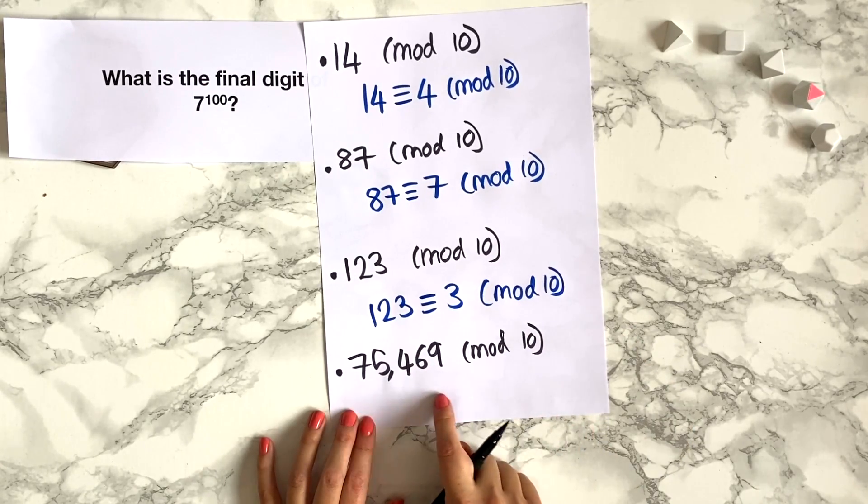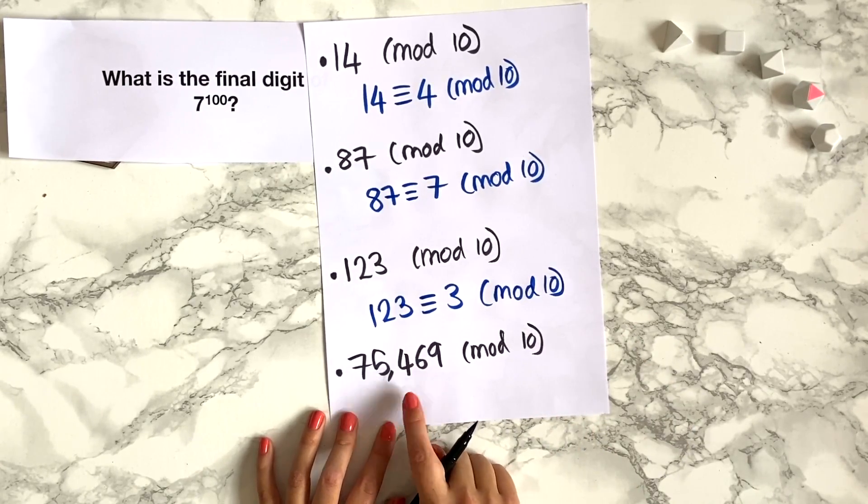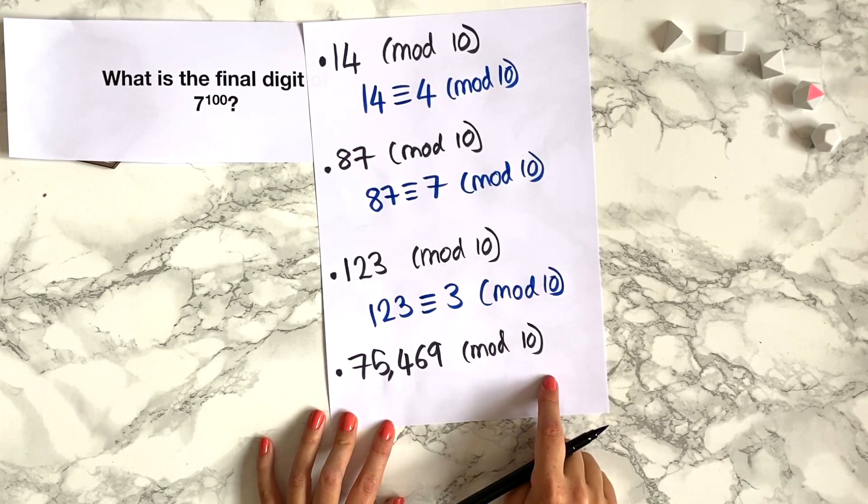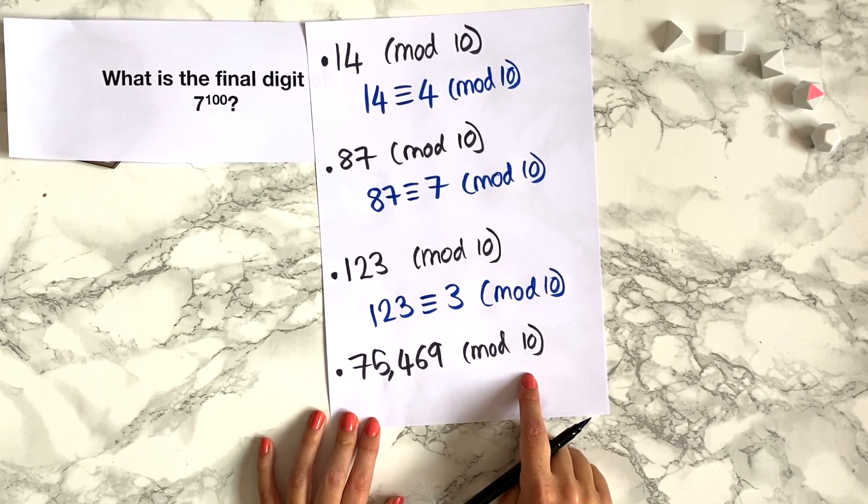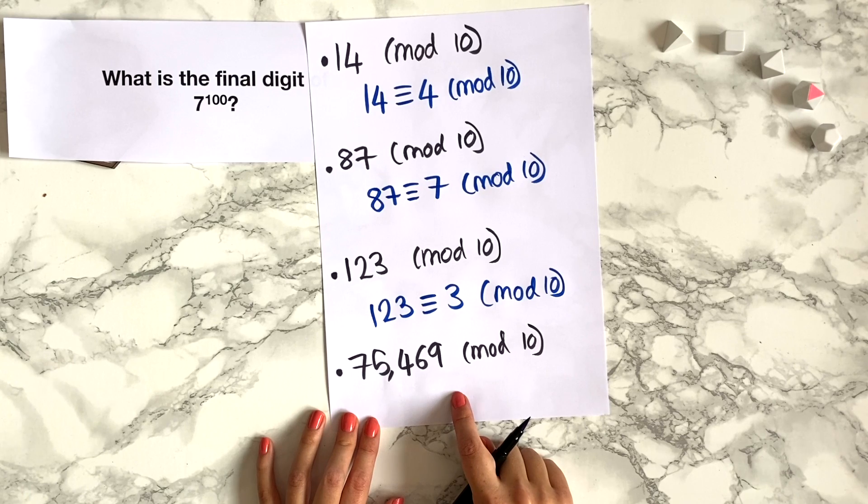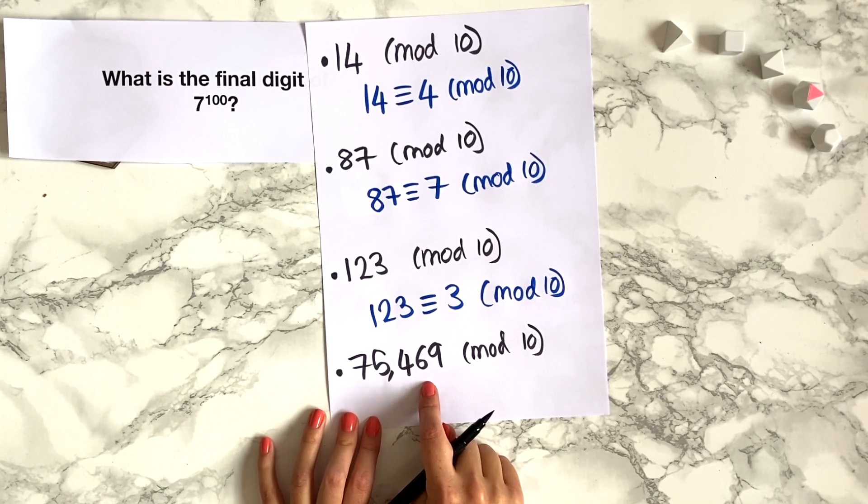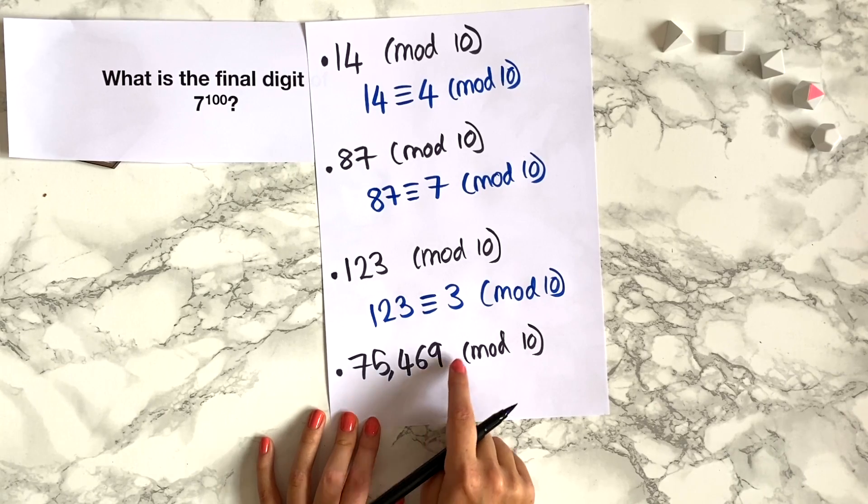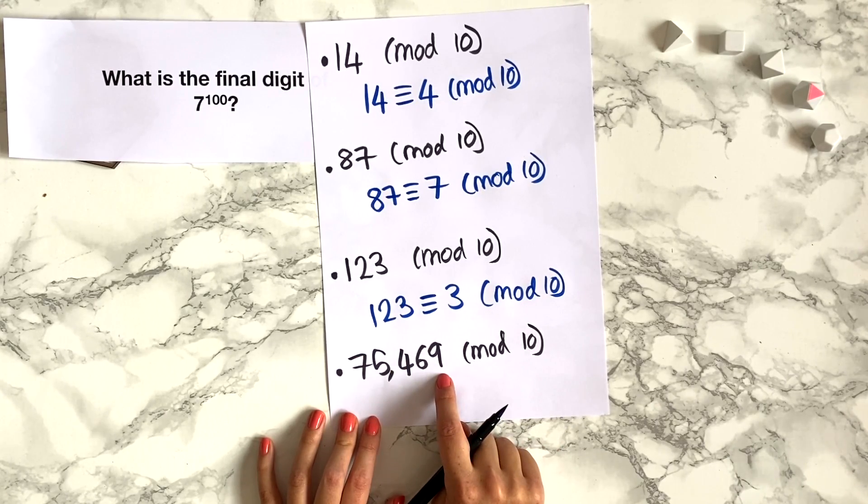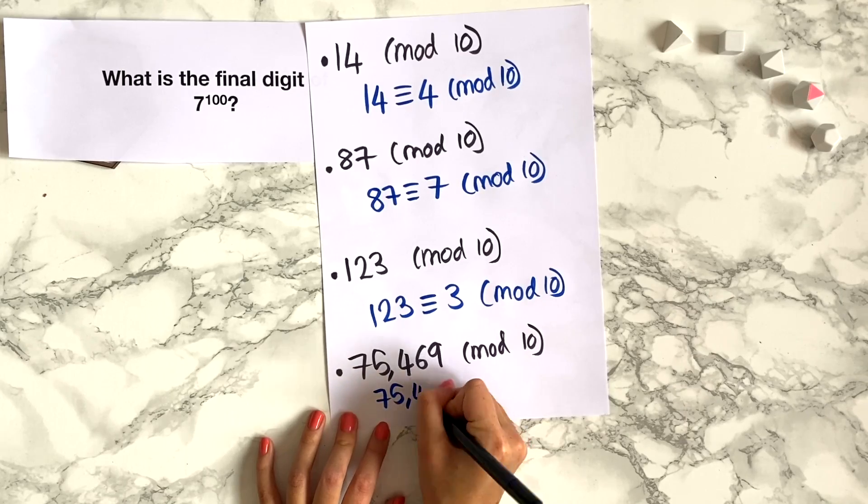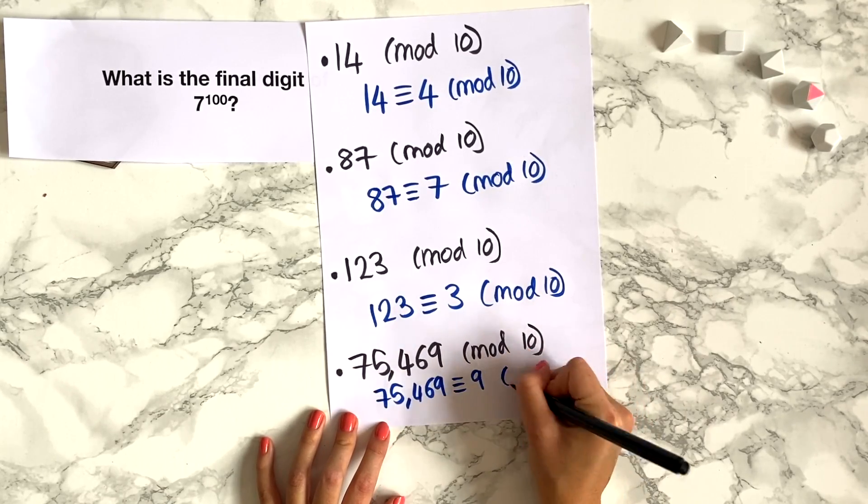And finally this big number here 75,469 mod 10. This looks a little bit scary to work out but actually it's not so bad because 75,460 is divisible by 10, so the remainder when you divide this by 10 is going to be 9. So this number is congruent to 9 mod 10.